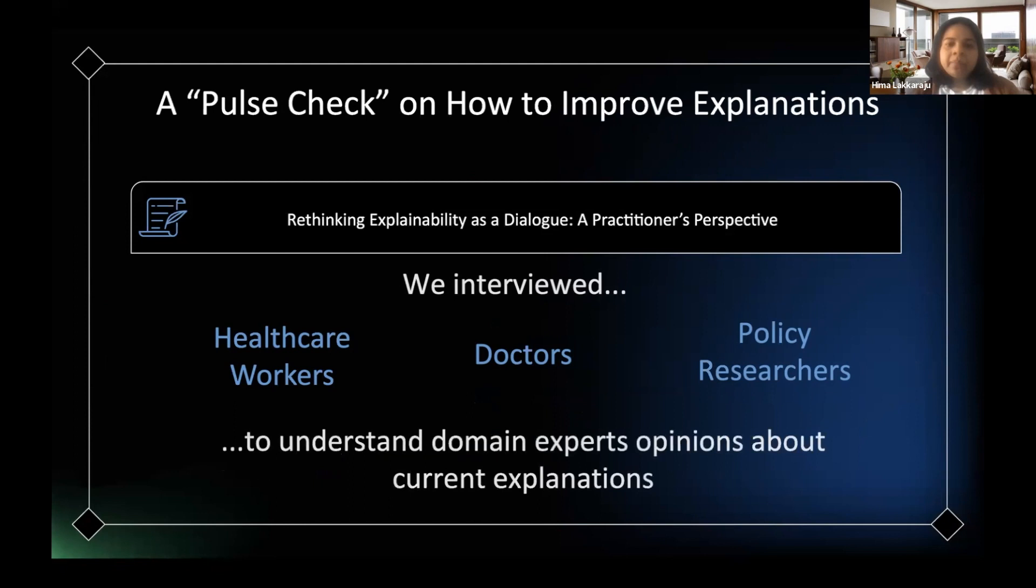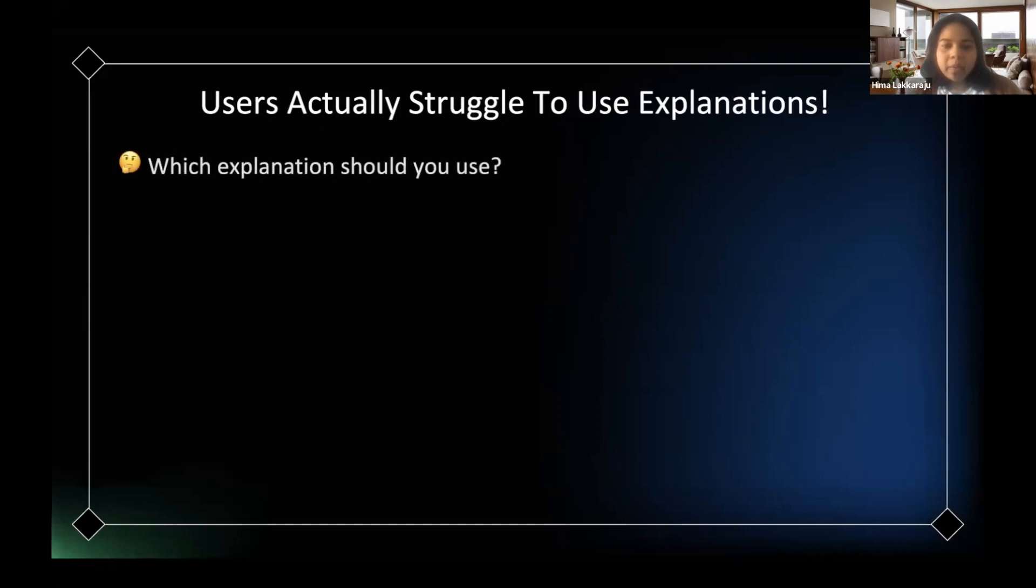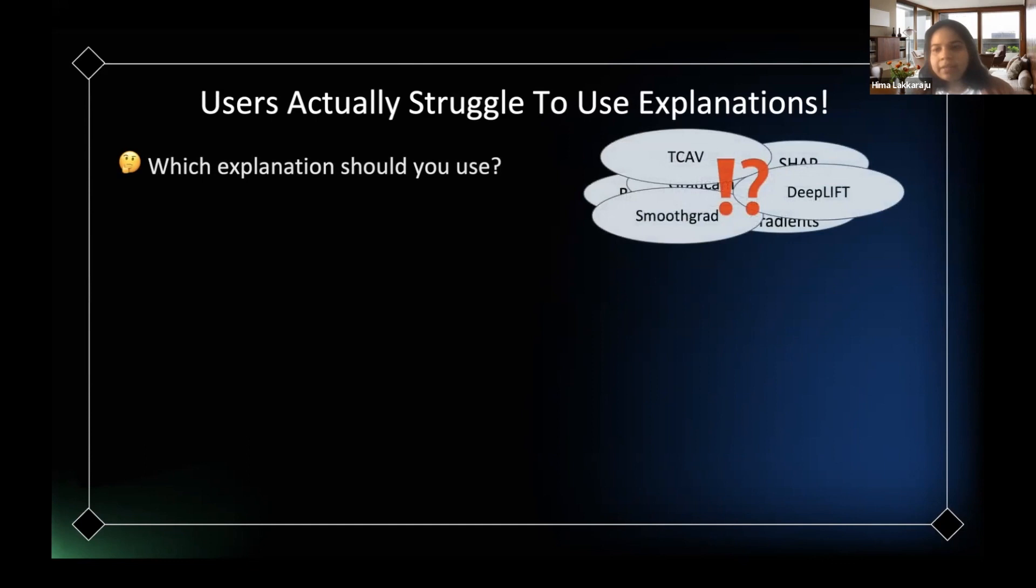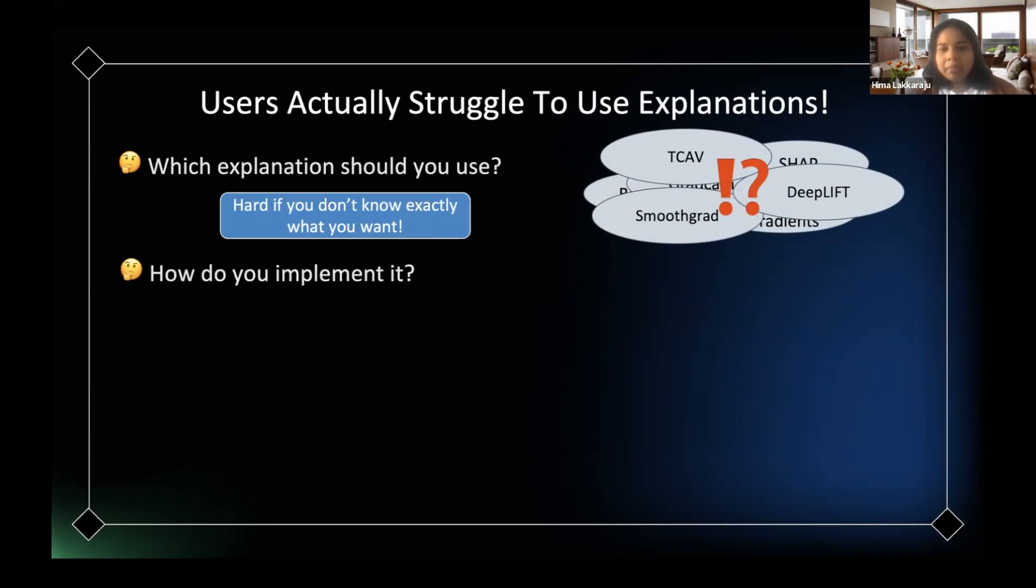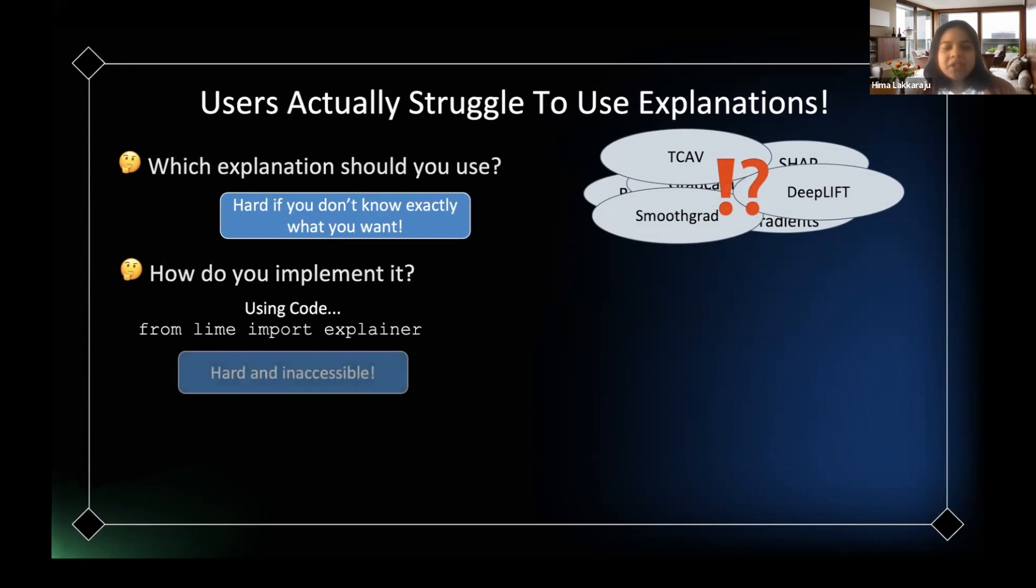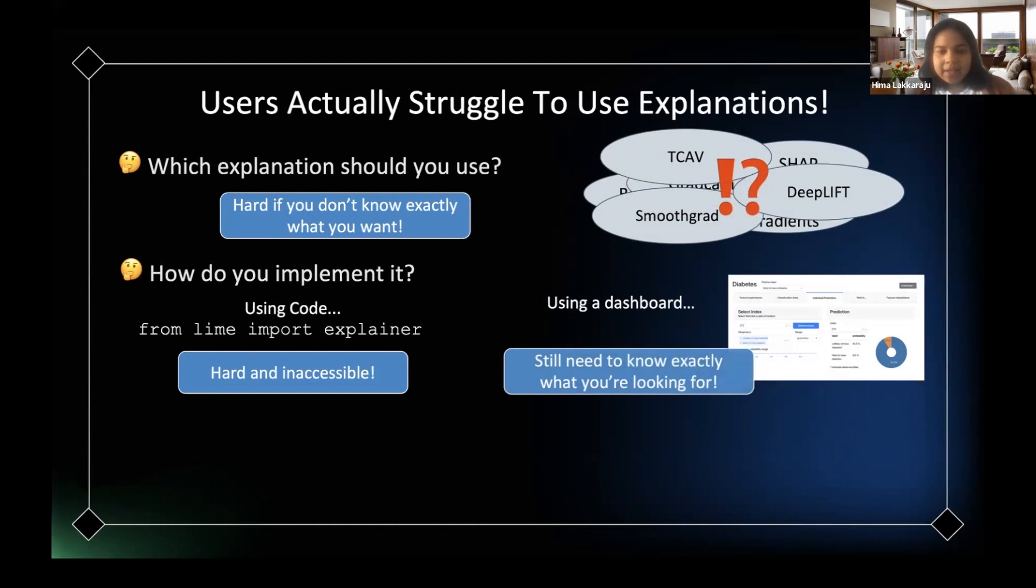Essentially what they told us is the following. In some sense, they are puzzled by questions such as which explanation should you use, which method should you use, because there are several options and they just don't know which one to rely on, going back to our disagreement problem. The second one is, okay, if I pick a method, which implementation should I use? Is it one library versus another? And they again have very little idea as to how to approach that problem.